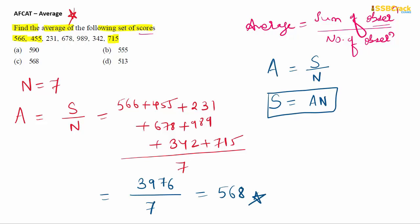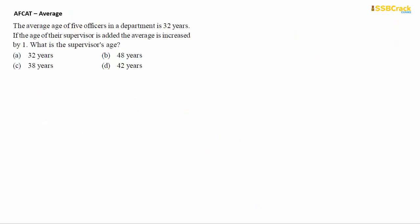Dividing 3976 by 7 gives us 568, which is the average — also called the mean. So the answer is Option C.